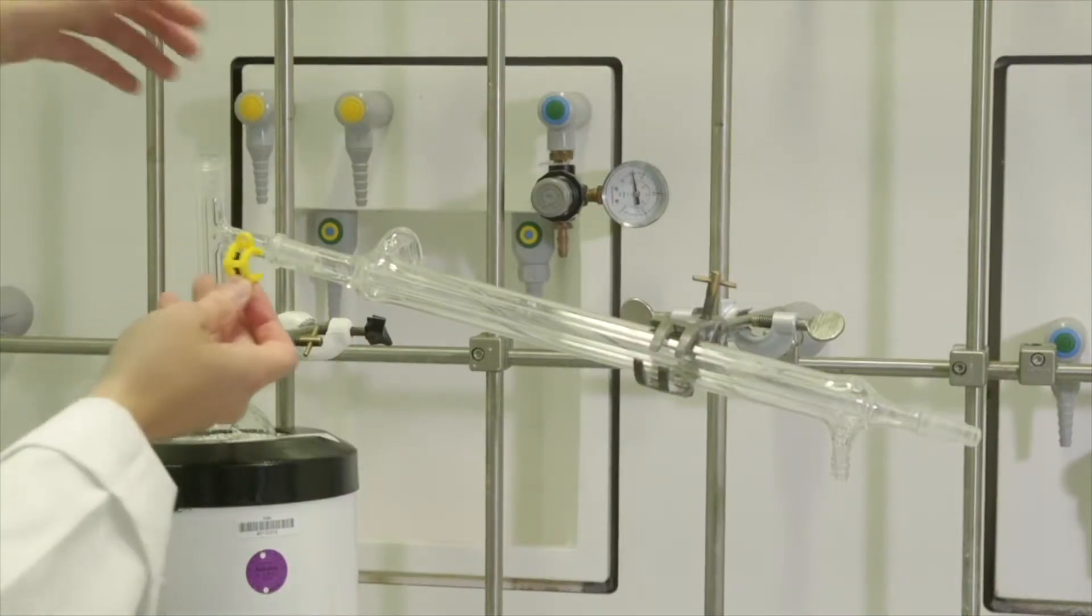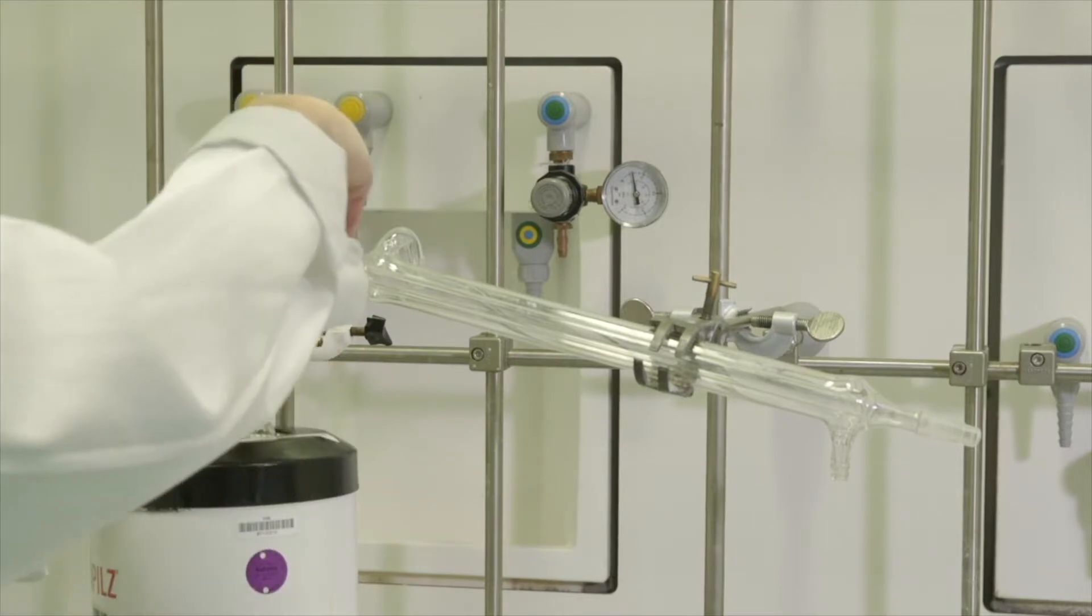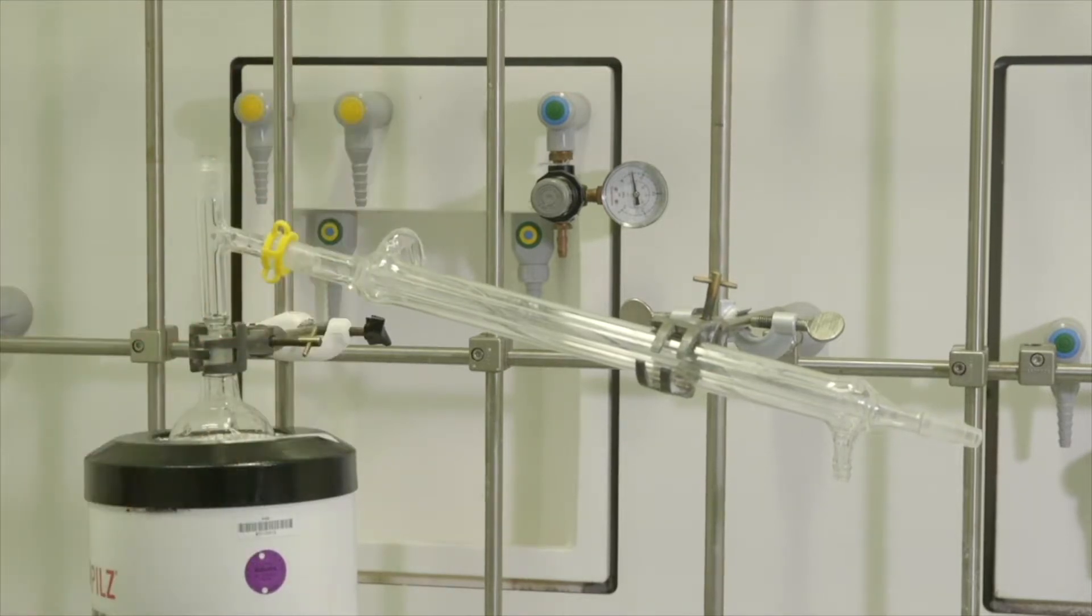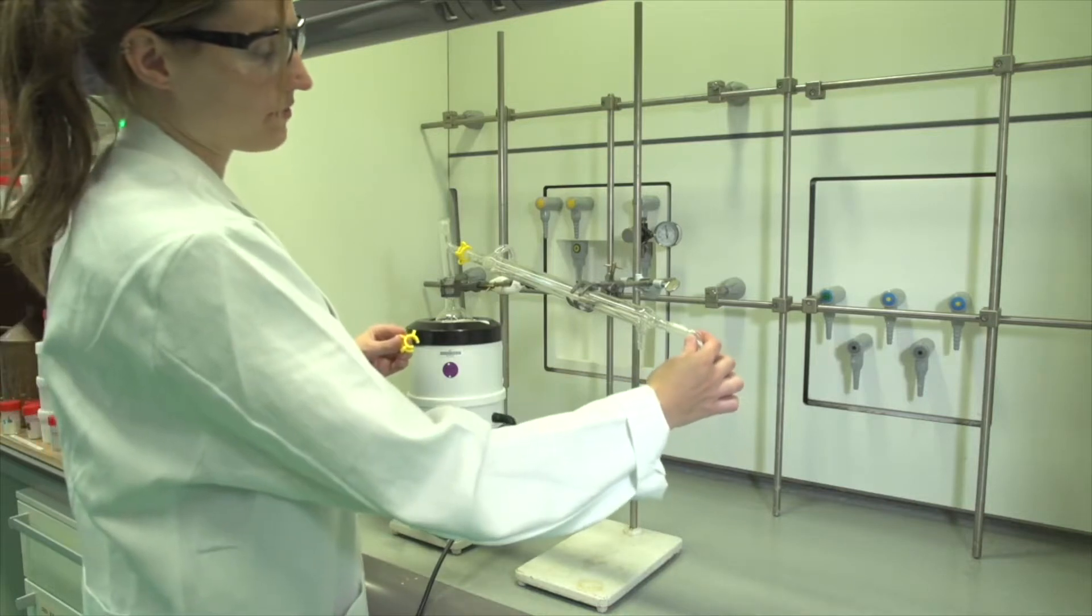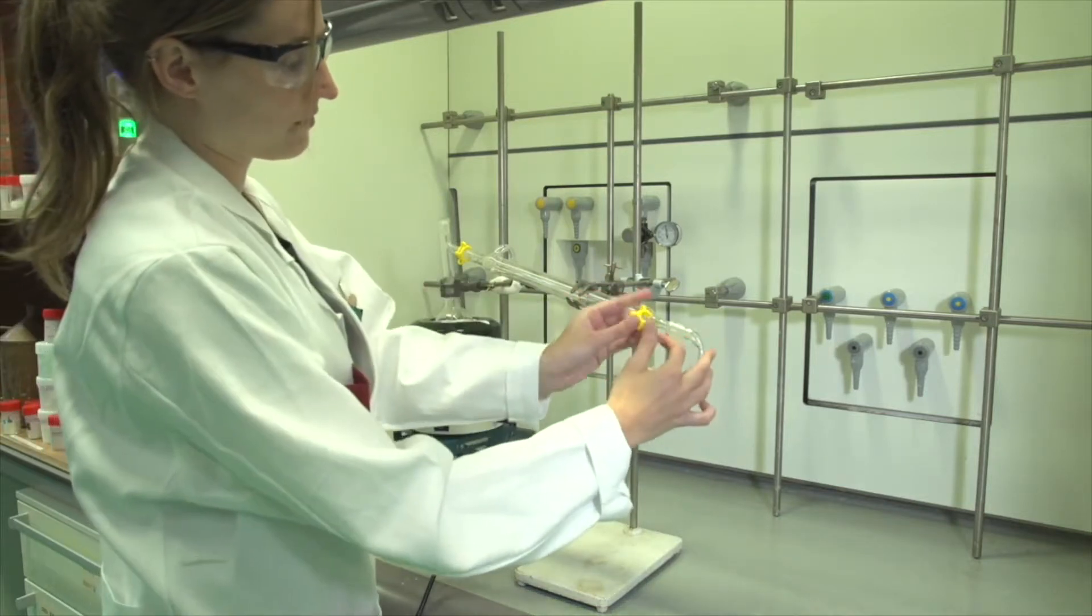Ensure that the condenser is positioned at a slanted angle. Secure the whole setup with a plastic clamp. The bent adapter is attached to the other end of the condenser and secured with a plastic clamp.